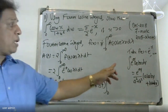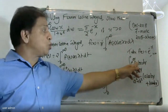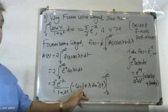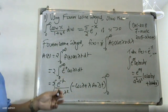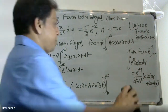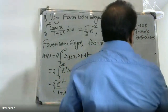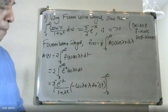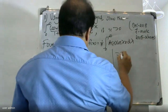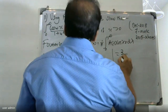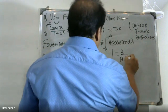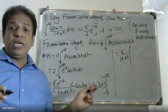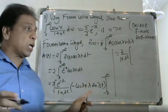Applying the upper limit infinity and lower limit zero, the upper limit gives zero (since e^(-∞) → 0), and the lower limit gives 2/(1 + λ²).